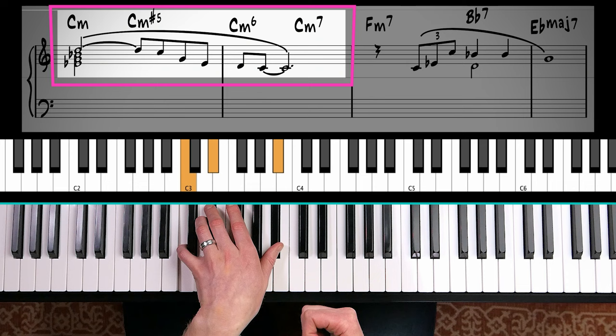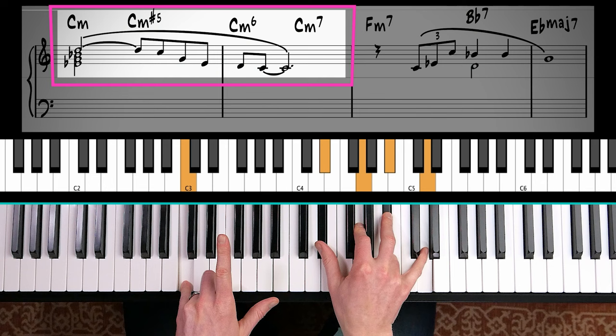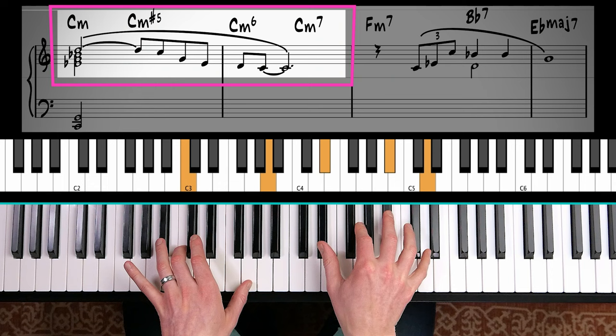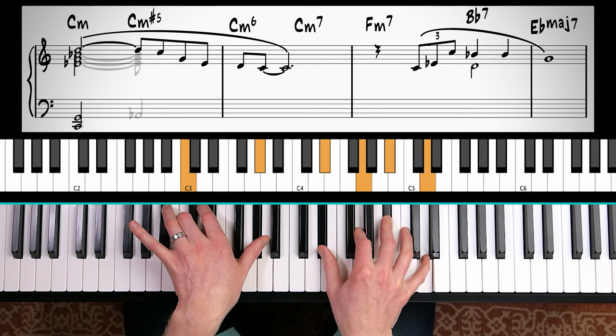Now to play my rootless voicing up here, I'm actually going to play root and fifth, partly to make it more bassy, but also because I want the chromatic line to be separated. I'm not going to play the chromatic line up here. I'm going to do that.